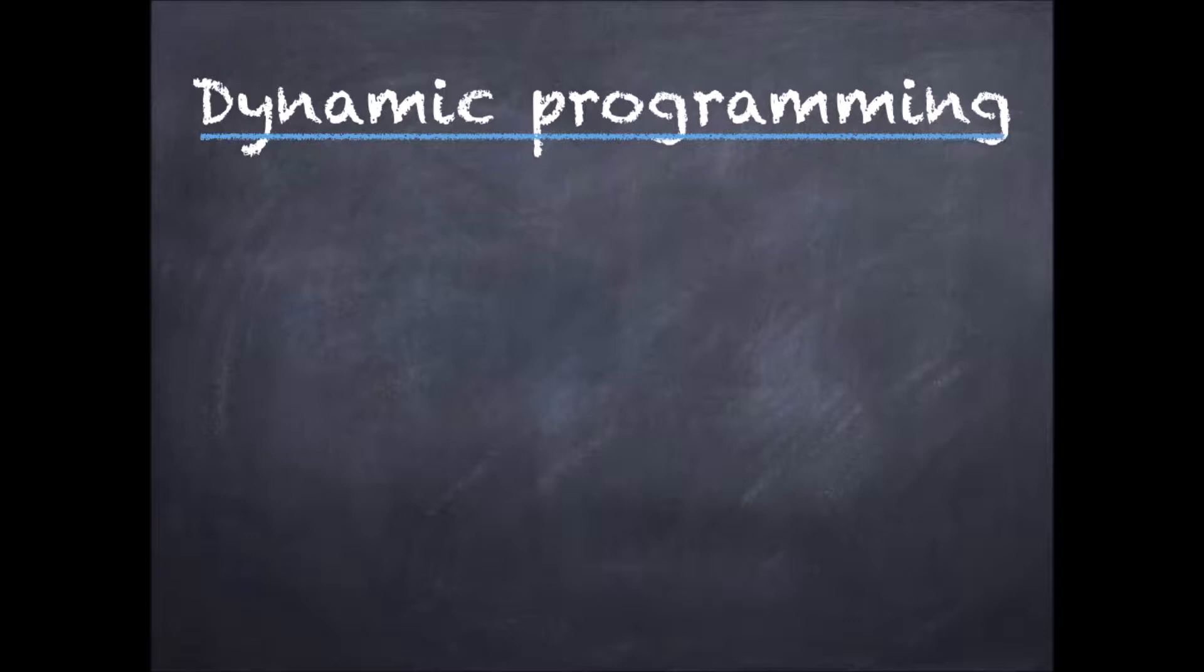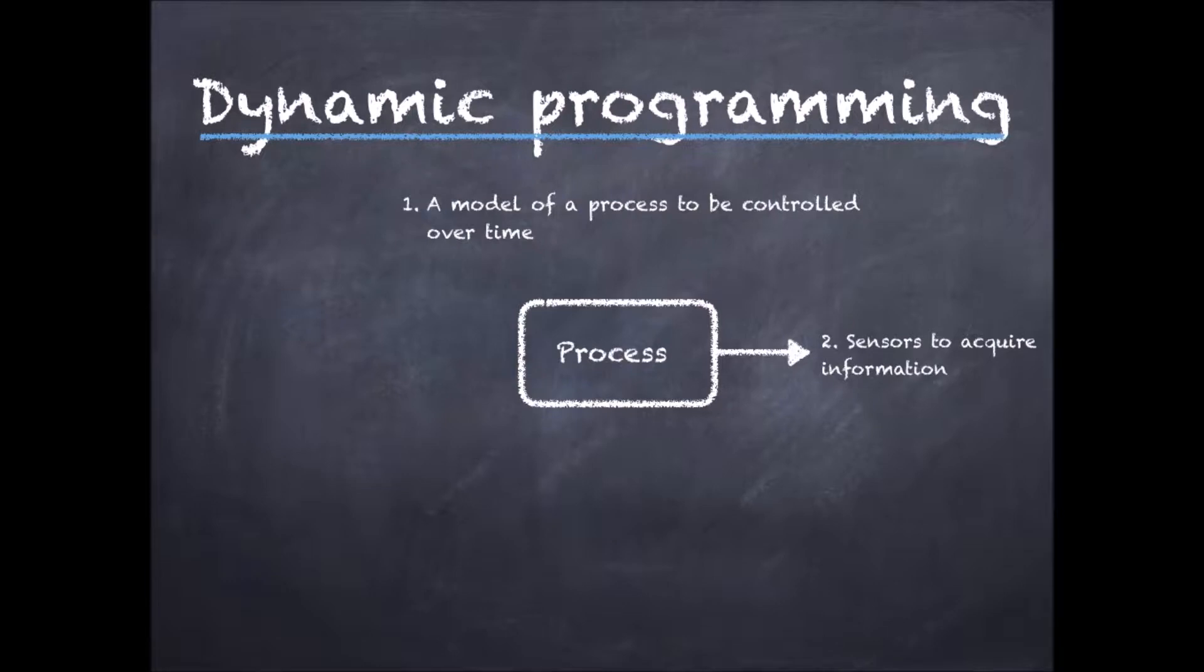Let me start by introducing dynamic programming. Dynamic programming is a very broad framework to tackle control and decision-making problems. It includes four main ingredients: a process to be controlled over time, sensors that provide information about the process, actuators enabling to influence the process, and finally a cost or profit function modeling the objectives.